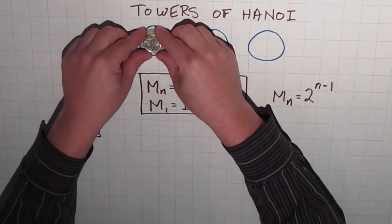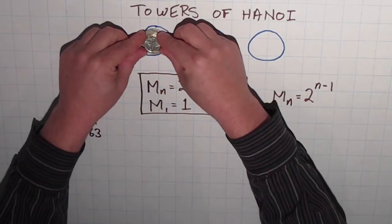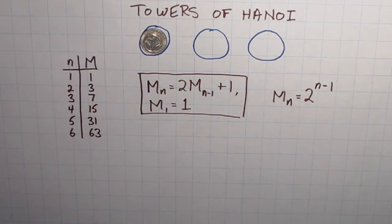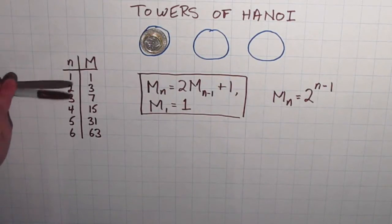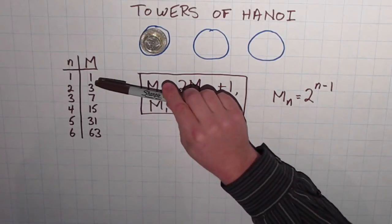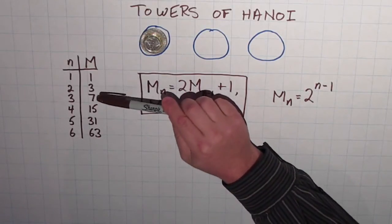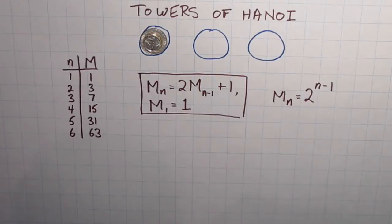What we were interested in was the minimum number of moves to do the puzzle, and we ended up producing this table here, where the column on the left represents the number of coins in the stack, and the column on the right, the minimum number of moves it took to move that particular stack of coins.